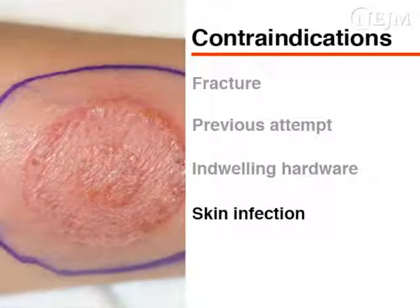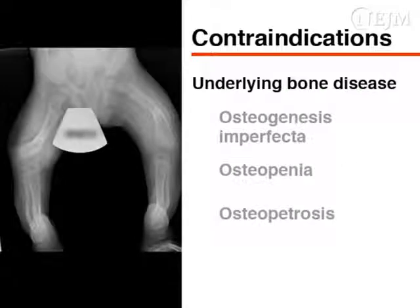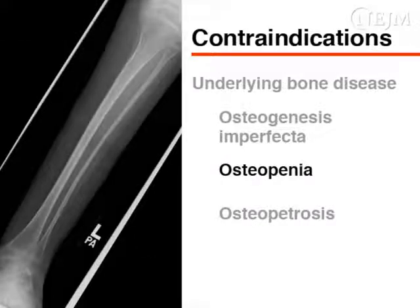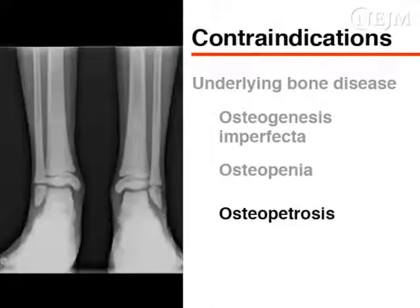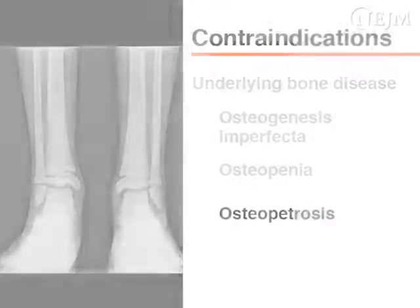The presence of skin or soft tissue infection is a relative contraindication. Avoid intraosseous cannulation in patients with underlying bone diseases, such as osteogenesis imperfecta or osteopenia, in whose bones may not tolerate or support cannulation, and in patients with osteopetrosis, a condition with very dense bone in which cortical penetration may not be possible.